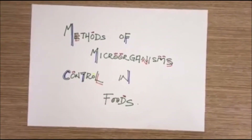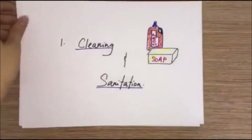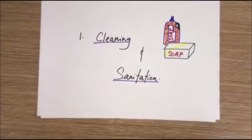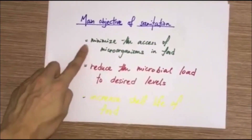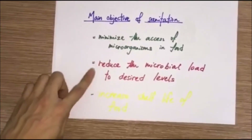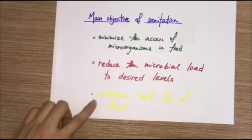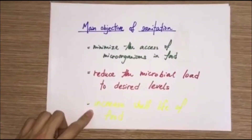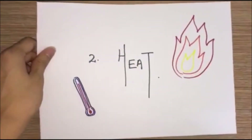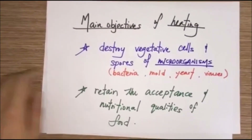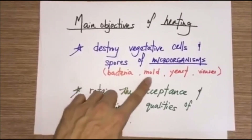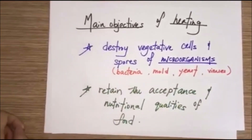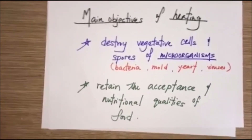Methods of microorganism control in food: The first method is cleaning and sanitation. The main objective is to minimize the presence of microorganisms in food, reduce the microbial load to desired levels, and increase the shelf life of food. The second method is heat treatment, which aims to destroy the vegetative cells and spores of microorganisms such as bacteria, mold, yeast, and viruses. It can also retain the acceptable nutritional qualities of food.